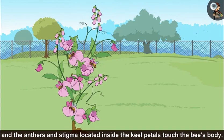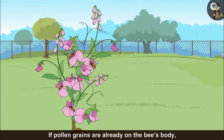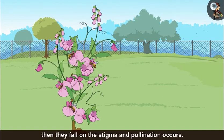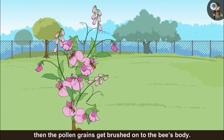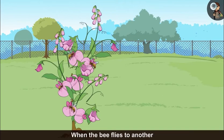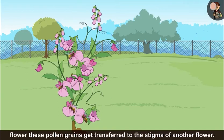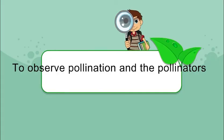If pollen grains are already on the bee's body, then they fall on the stigma and pollination occurs. If the anthers are matured, then the pollen grains get brushed onto the bee's body. When the bee flies to another flower, these pollen grains get transferred to the stigma of another flower.